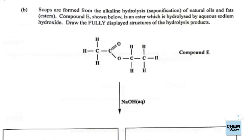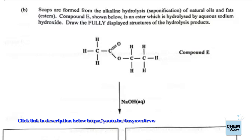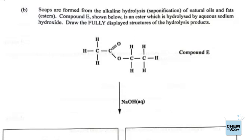Part B of 5: soaps are formed from the alkaline hydrolysis or saponification of natural oils and fats — esters. Compound E, shown below, is an ester which is hydrolyzed by aqueous sodium hydroxide. Draw the fully displayed structures of the hydrolysis products. If you're at this point and unsure, I recommend checking the link in the description below that outlines reactions of esters. So for hydrolysis of an ester, we always cut right at the ester linkage — draw a pair of scissors right there, that's where we cut.